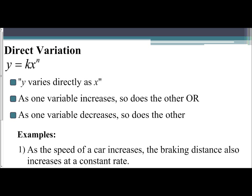Direct variation occurs when one variable varies directly to another variable, so the phrase 'y varies directly as x.' We're going to use y equals k times x to the n power. What it means to vary directly—the phrase is 'directly'—means there's a direct relationship between the two variables.